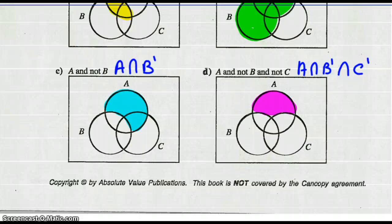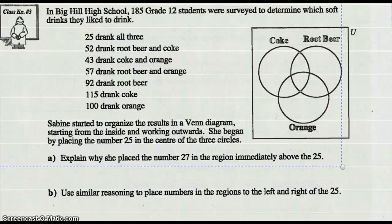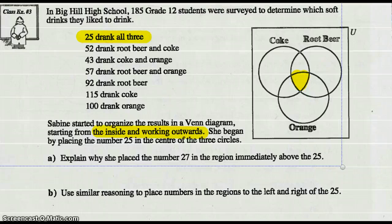Let's go to Example 3 on page 28. In a big high school, 185 Grade 12 students were surveyed to determine which soft drinks they like. We need to organize the results in a Venn diagram, starting from the inside out. The center — the intersection of Coke, root beer, and orange — is 25, since 25 drank all three. So we put 25 in the center.